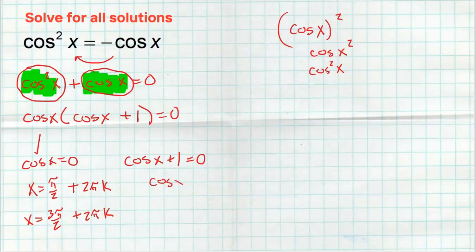Now we solve the second equation. Subtract one from both sides: cosine of x equals negative one. That of course happens at pi. And then it's going to happen a full circle as many times as we want — pi plus two pi·k — representing all solutions. So be careful when it says all solutions; you've got to add something to allow for these infinite solutions.